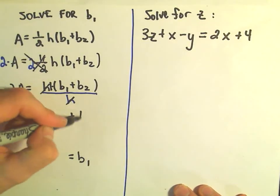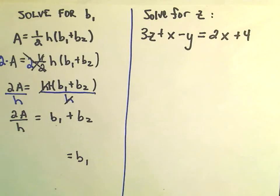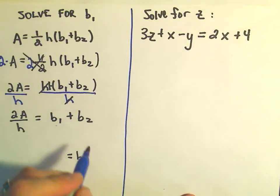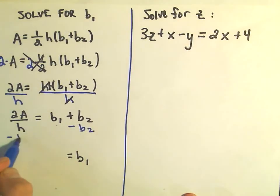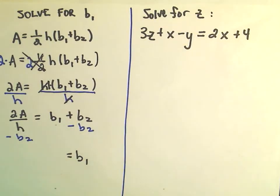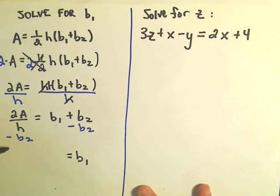And now to simply get b1 all by itself, since I'm adding b2, I would subtract b2 from both sides. Well, on the left side, they're not really like terms, so there's not a lot we can do.